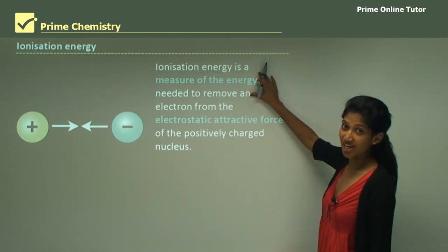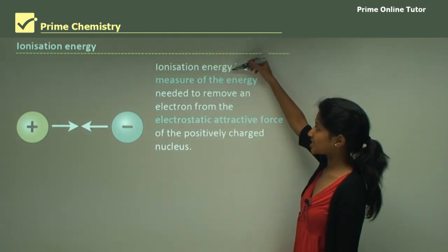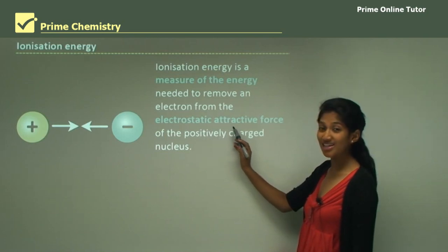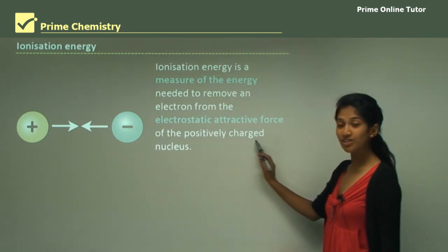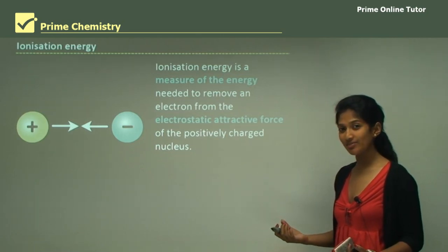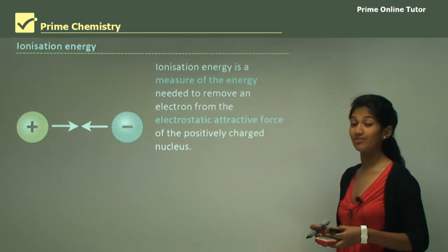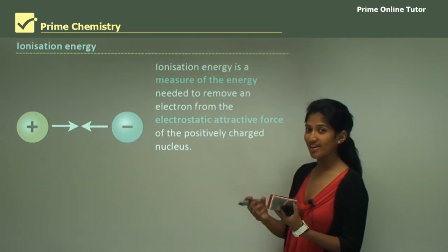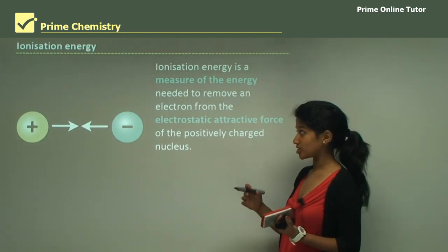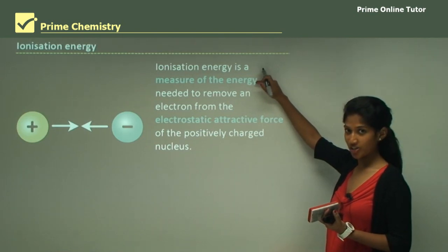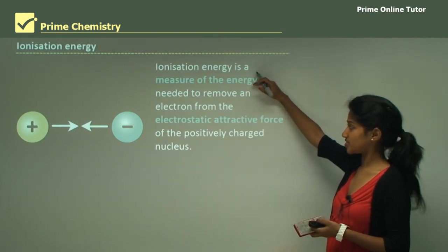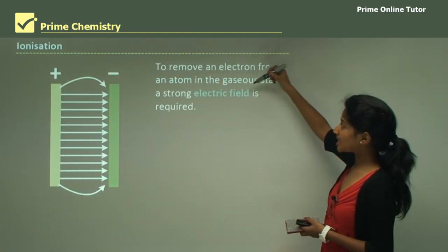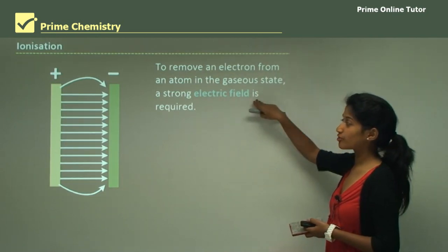Ionization energy is the measure of the energy needed to remove an electron from the electrostatic attraction force of the positively charged nucleus. Because electrons are negatively charged and the nucleus is positively charged, there is an electrostatic attraction. To break that attraction requires energy, called ionization energy. To remove an electron from an atom in the gaseous state, a strong electric field is required.